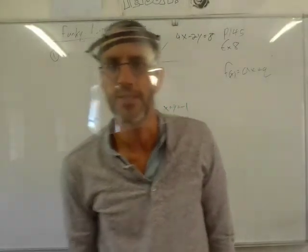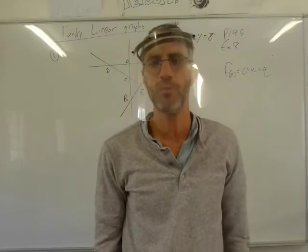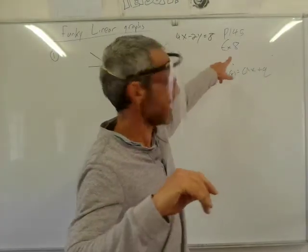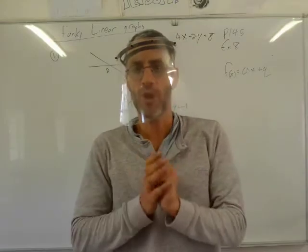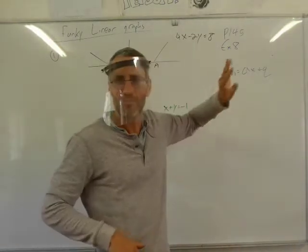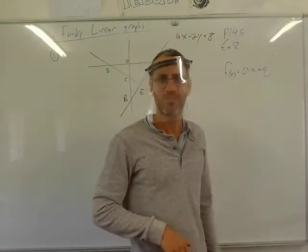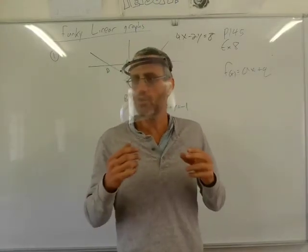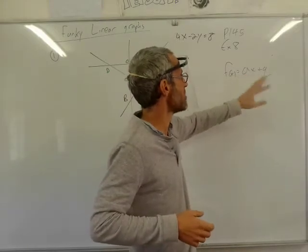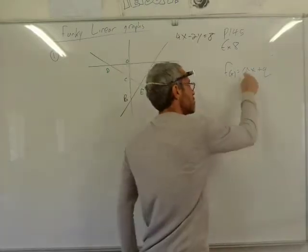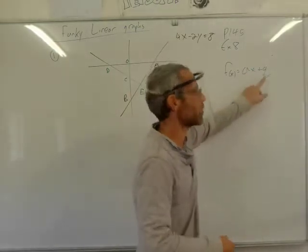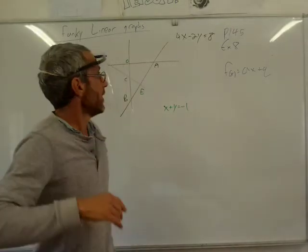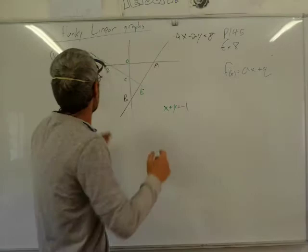Last lesson of the week. We're still with linear graphs, but it's what I call funky linear graphs. We're on page 145, exercise 8. We know linear graphs all look like ax + q — sometimes you see m instead of a. I do this deliberately because I don't want you to get attached to specific letters. The number in front of x is the gradient, and the plus or minus value is the y-intercept, the vertical shift.